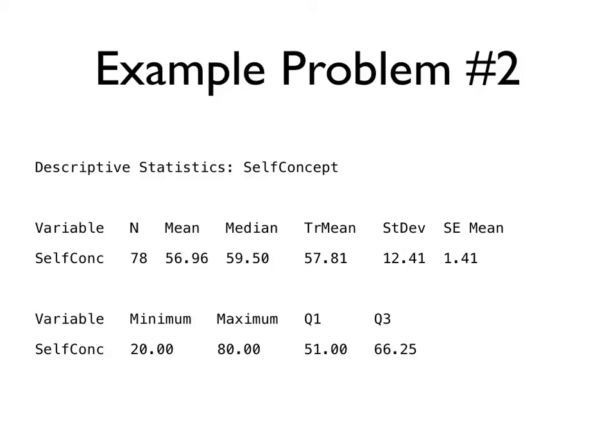We've got a bunch of different summary statistics here. This is kind of typical of what a computer would give you if you asked for summary statistics. So the variable we're looking at is self-conc, which is an abbreviation of that self-concept score. N always refers to the number of individuals. Here we had 78 students.